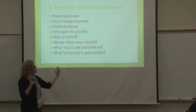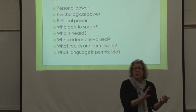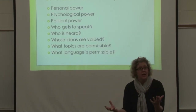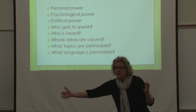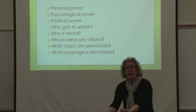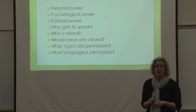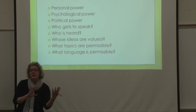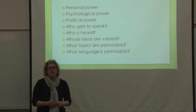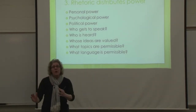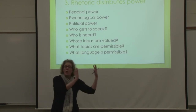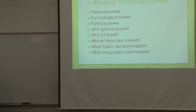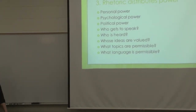Topics and language — this idea of being permissible and valued — has a lot to do with Kairos. Kairos sets a time, a good time, for something to be said. Kairos changes over time so that there are good possible times to talk about things, and other times where something can't be talked about. And what language is permissible? There are explicit and unspoken rules about what kind of language can and cannot be used in a particular situation. All of that relates to how rhetoric distributes power across people within a group or society.